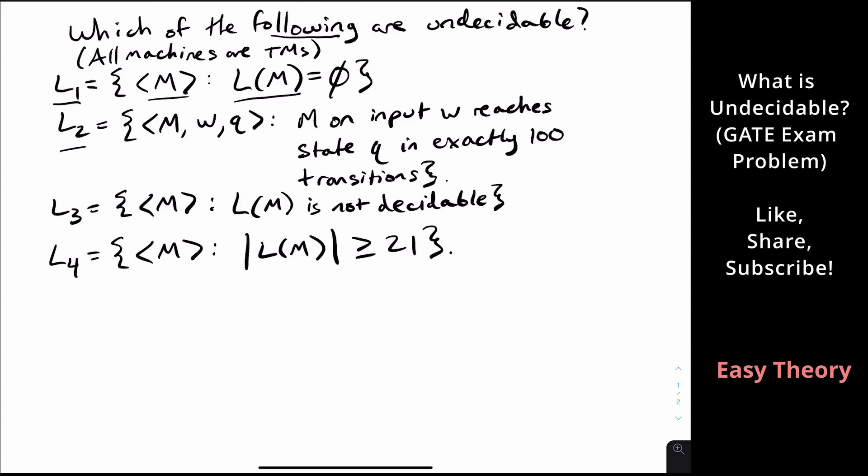The second one we have a machine, a string, and a state, and we are in L2 if the machine on that input reaches that particular state Q in exactly 100 transitions.